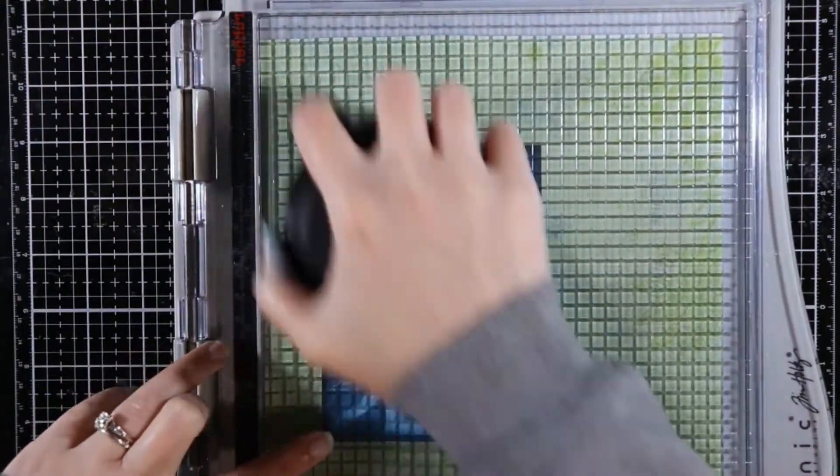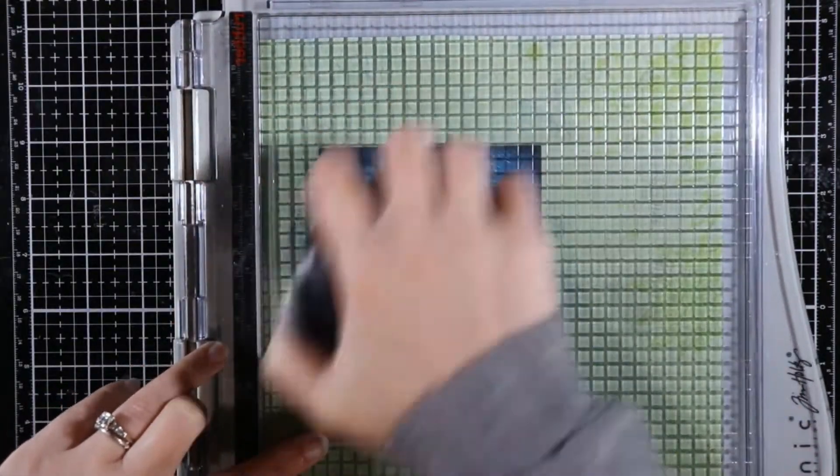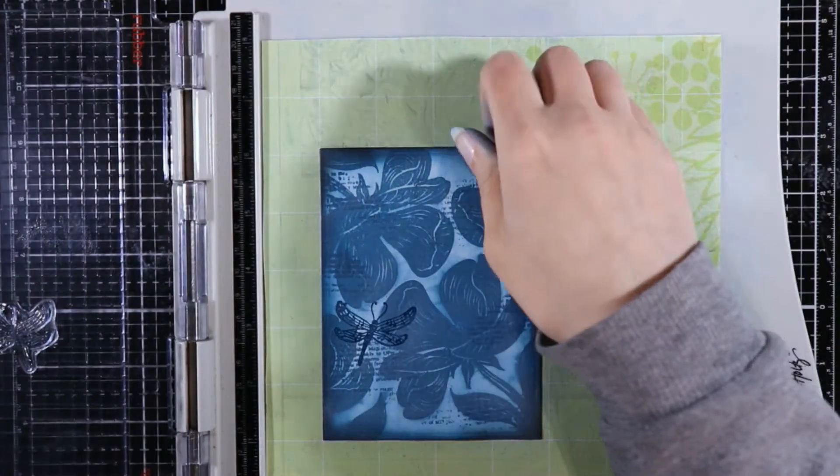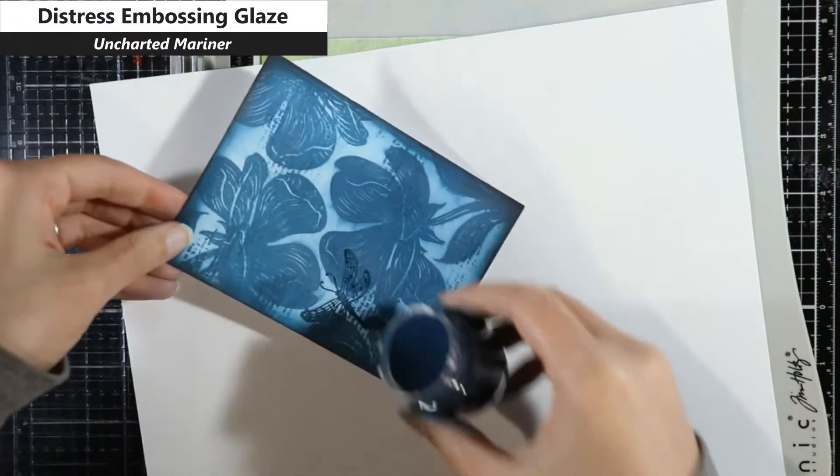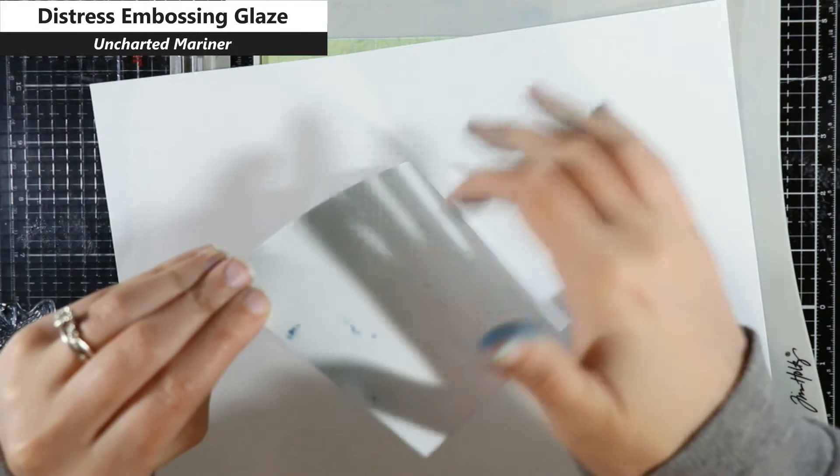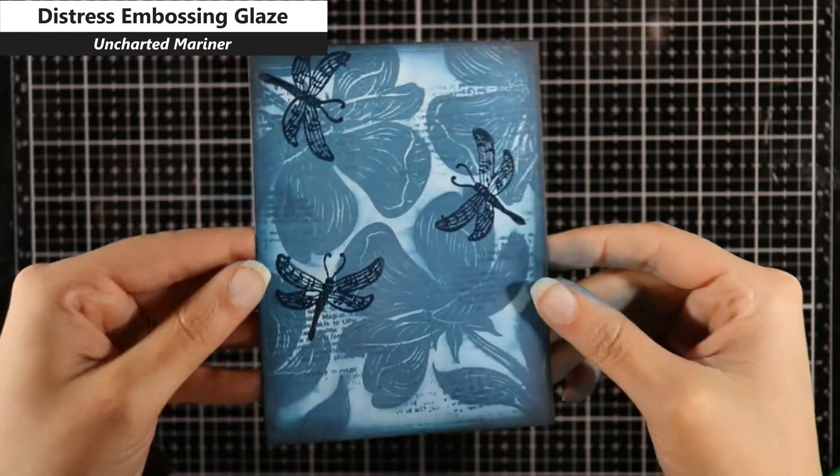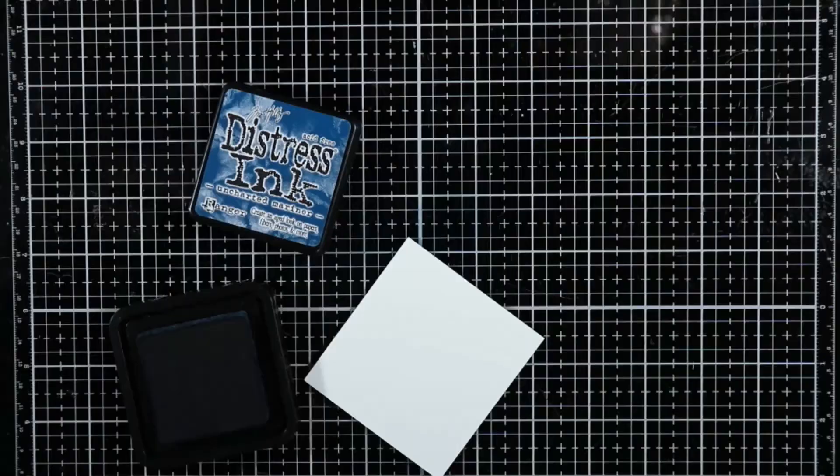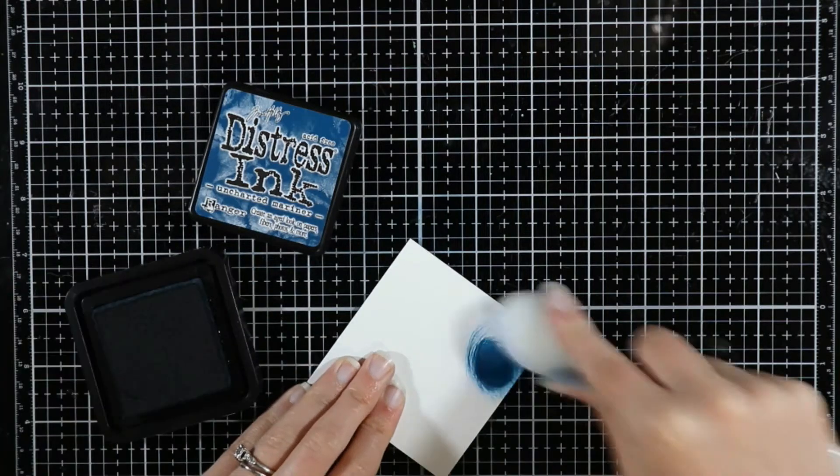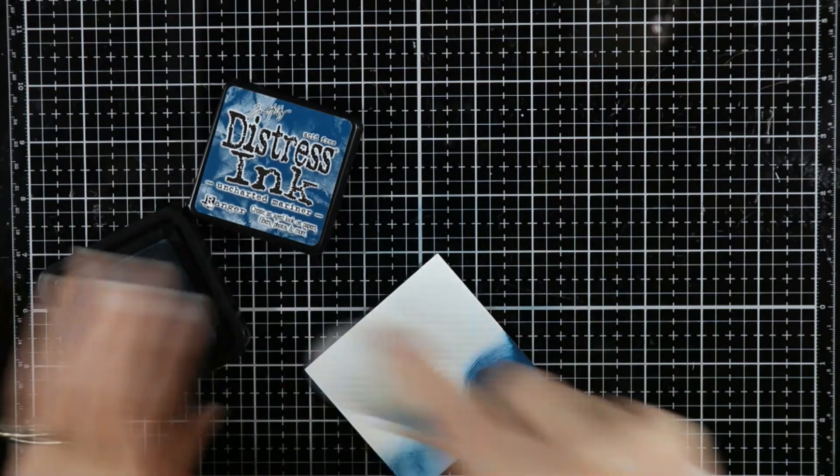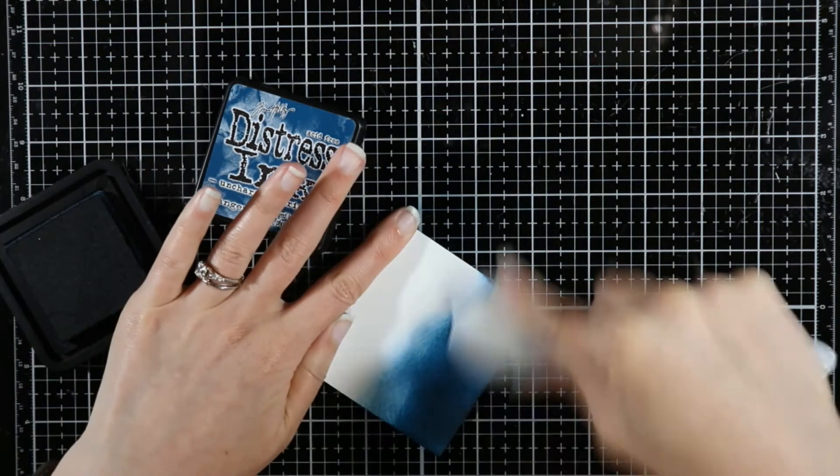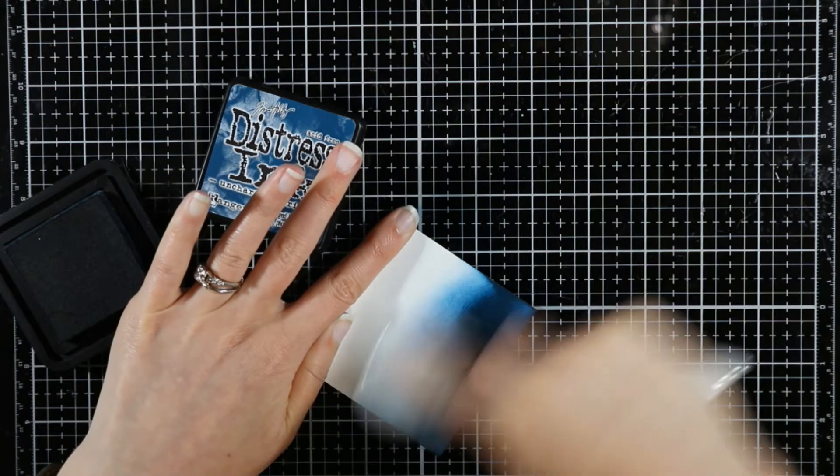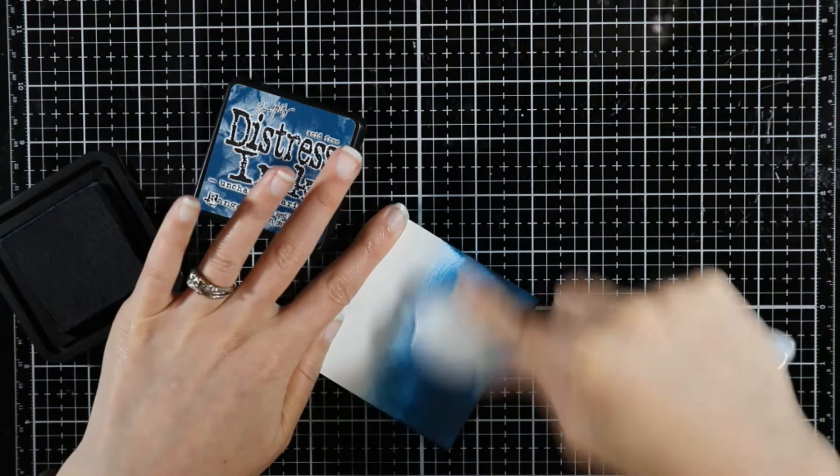I am going to put the Uncharted Mariner embossing glaze over the top. You might be able to use the distress oxide if that's all you had because the embossing glaze is going to make it darker. It may not be quite as dark as what I have here, but it would be darker. I did stamp that dragonfly two more times off screen just so you didn't have to see me do it repetitively.